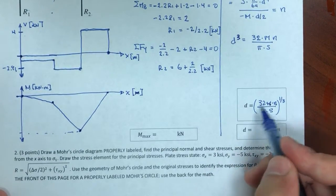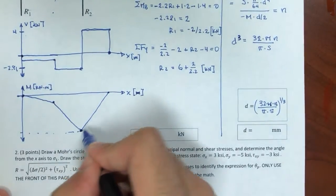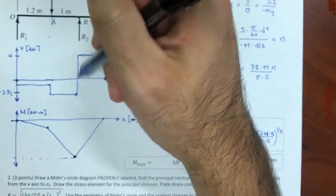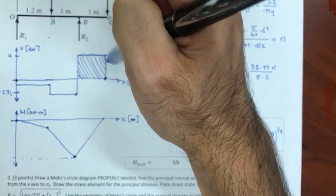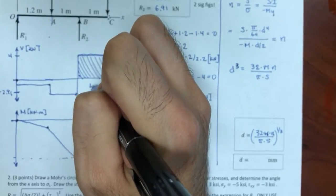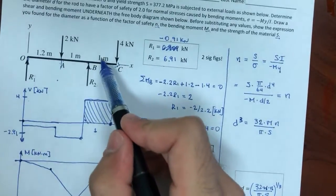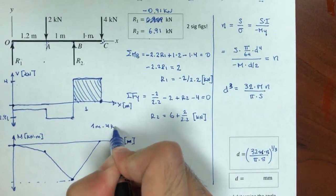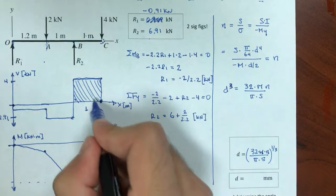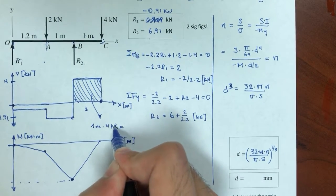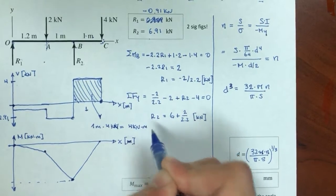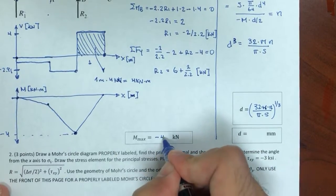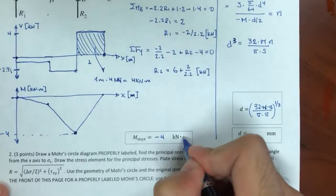I'm interested in the maximum moment value — I integrate the shear to get it. The shaded area from B to C is 1 meter times 4 kilonewtons, giving 4 kilonewton·meters. It's a negative value, so the maximum bending moment is minus 4 kilonewton·meters. That's exactly what I needed.